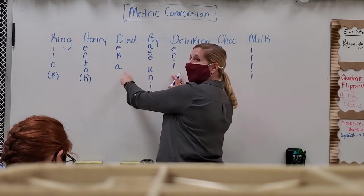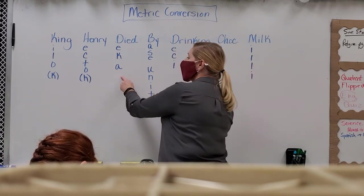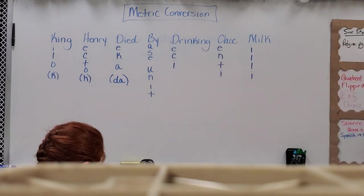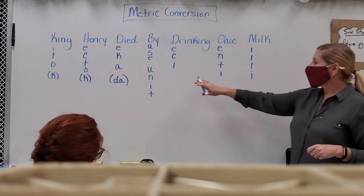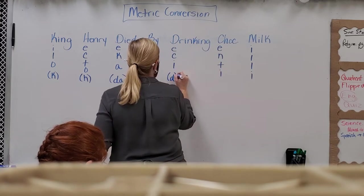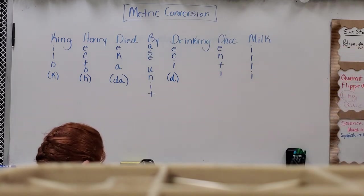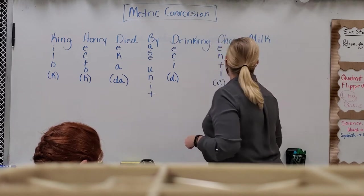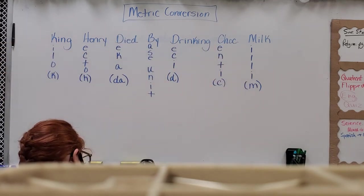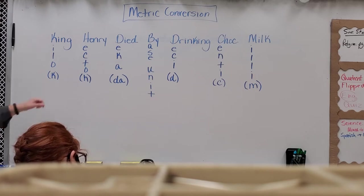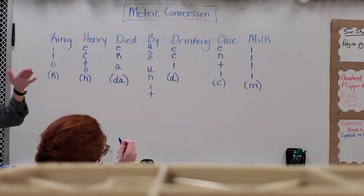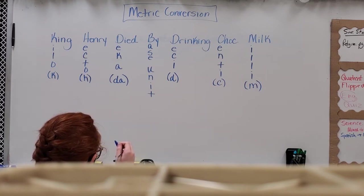We have two D's, so we can't name them both D. This one — deca — we call 'da.' The lower one — deci — can be plain lowercase D since we made the other one 'da.' Centi is lowercase C. Milli is lowercase M. These are all prefixes, so they go in front of the unit — we could have kilometers, kilograms, or kiloliters. The K is lowercase.